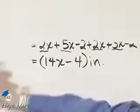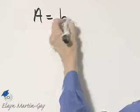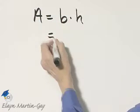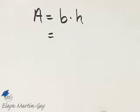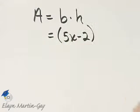Now that I've found the perimeter, let's find the area. The area of a parallelogram is base times height. The base length is 5x minus 2, and the given height is x plus 7.